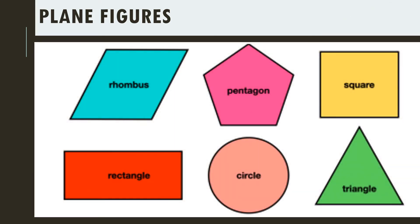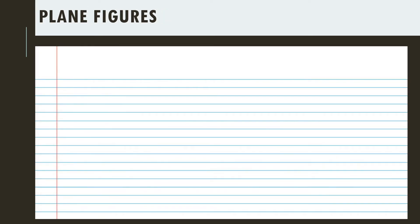Here are examples of plane figures: regular polygon, rhombus, pentagon, square, rectangle, circle, and triangle. You already know about those. The key thing about plane figures is that they are flat — they have no thickness. Anything that we can draw on paper is a plane figure.